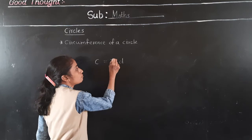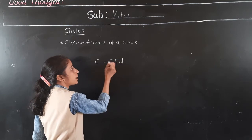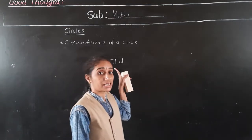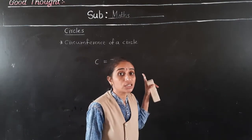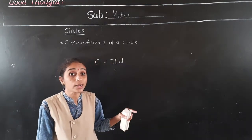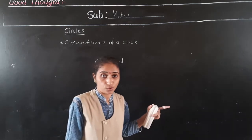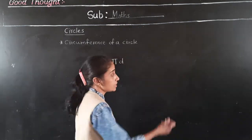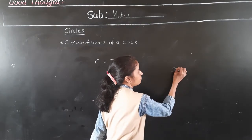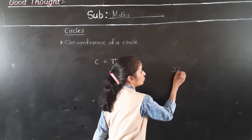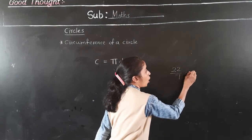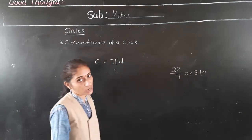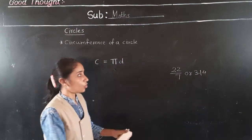This is the symbol of pi. What is the established value for pi? It is 22 upon 7, or 3.14. We take whichever value is given in the question.